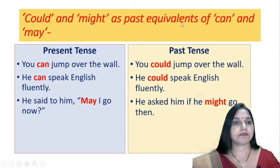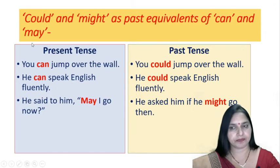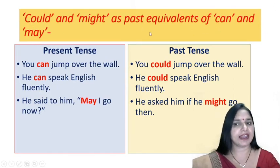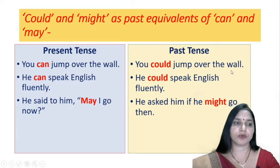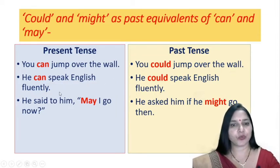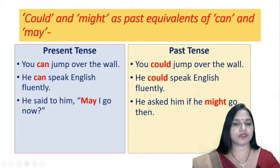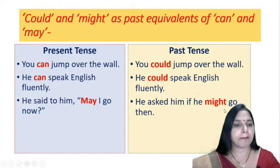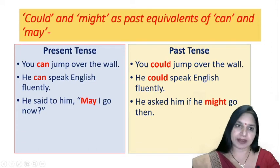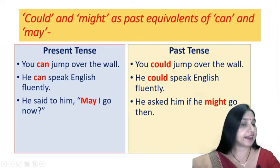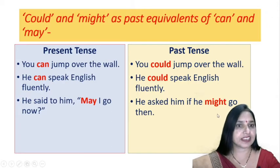Could and might are used as past equivalents of can and may. In present tense we say, 'You can't jump over the wall,' but in past we say, 'You could jump over the wall.' 'He can't speak English fluently' becomes in the past, 'He could speak English fluently.' In direct speech: 'He said to him, may I go now?' When changed to indirect speech, the reporting verb is in the past tense, so we use 'might' instead of 'may': 'He asked him if he might go.'